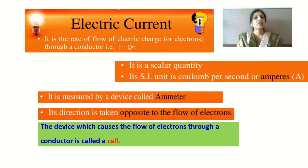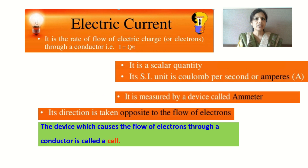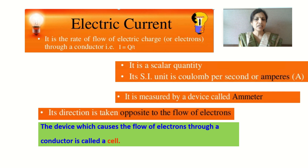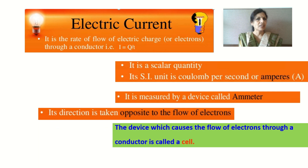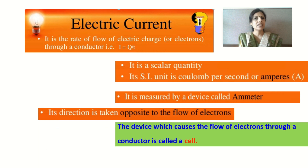Electric current is measured with the help of a device called an ammeter. An ammeter is always connected in series with the circuit, and we will discuss this in detail in the later part of the video. There has to be something in an electrical circuit which will cause the flow of electrons, and this is a device called a cell or a battery. A cell or battery is responsible for making the electrons flow in an electrical conductor.